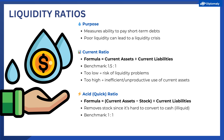The first liquidity ratio is the current ratio, which calculates the firm's ability to meet its short-term debts generally speaking. The formula is current assets divided by current liabilities. A good benchmark for this ratio is 1.5 to 1, which shows that the firm has enough current assets to pay off its current liabilities, while also having a buffer in case their financial situation takes a turn for the worse — giving them extra current assets to weather the storm and still continue to pay off their debts.